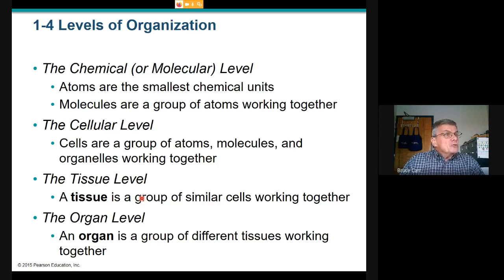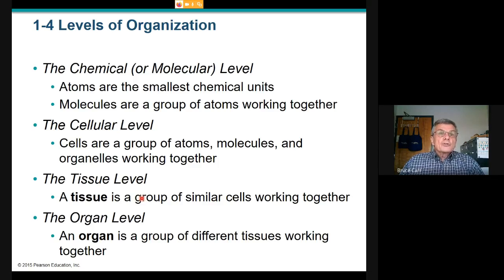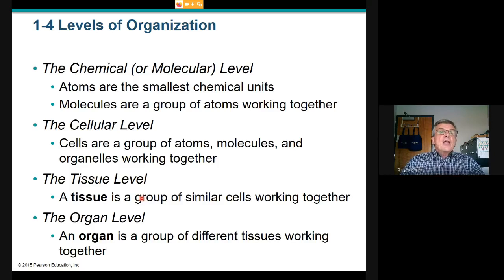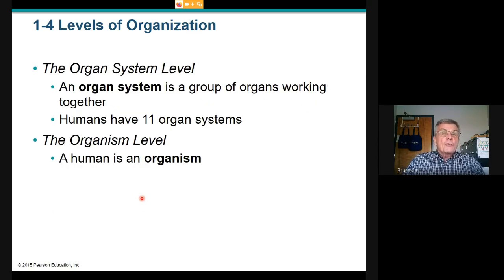Tissues combine to make organs, and every organ has all four tissue types. Every organ has surfaces — that's epithelial; structure — that's connective; some capacity for movement — that's muscular; and it must be signaled and regulated — that's nervous. That is the organ level. Put organs together in groups addressing a specific function and you get organ systems — there are 11 groupings.